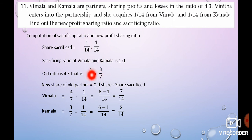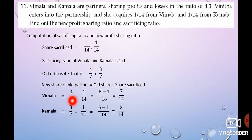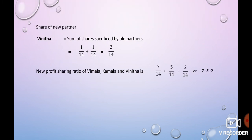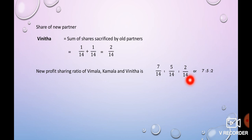Sacrificing ratio: 1 by 14 and 1 by 14, so sacrificing ratio of Vimala and Kamala is 1 is to 1. New shares of old partners = old share minus sacrificing shares. Vimala: denominator is 14, so 4 by 7 equals 8 by 14. 8 minus 1 divided by 14 equals 7 by 14. Kamala: 3 by 7 equals 6 by 14. 6 minus 1 divided by 14 equals 5 by 14. Vinita's share: 1 by 14 plus 1 by 14 equals 2 by 14. New profit sharing ratio of Vimala, Kamala and Vinita is 7 by 14, 5 by 14 and 2 by 14. That is 7 is to 5 is to 2.